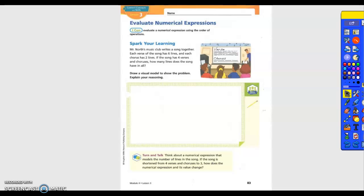Alright, we're going to begin our fifth grade Intro Math Lesson 4.3, Evaluate Numerical Expressions. I can evaluate a numerical expression using the order of operations. Spark your learning. Mr. North's Music Club writes a song together. Each verse of the song has six lines, and each chorus has two lines. If the song has four verses and the chorus says, how many lines does the song have in all? So I want us to draw a visual model to show the problem and explain your reasoning.